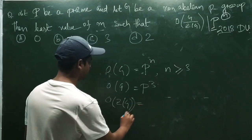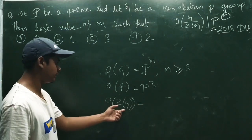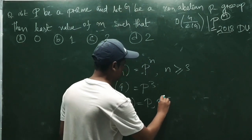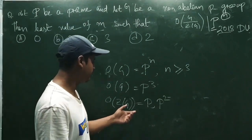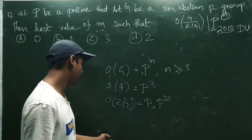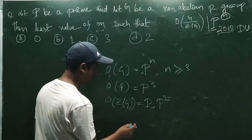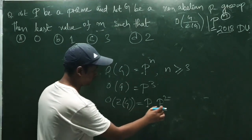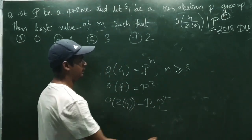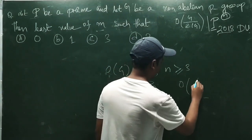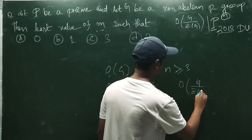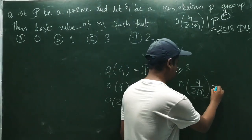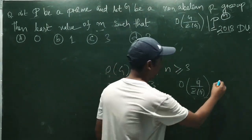The possible orders of the center are either P or P squared — it can never equal P cubed, or the group would be abelian. Now if the order of the center is P squared, then the quotient group Z by Z(Z) would have order P cubed divided by P squared, which equals P.